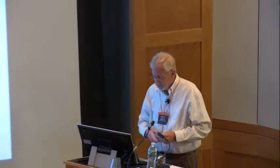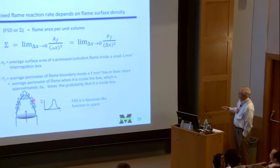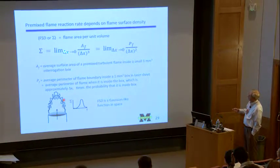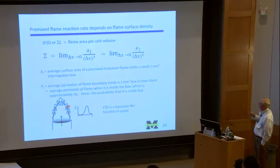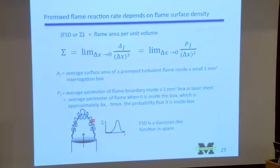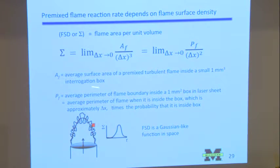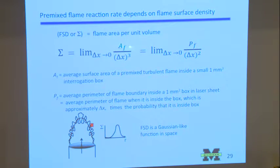Sigma is related to the PDF — if the flame is really dense and wrinkled, it'll have a high probability of being there. The flame surface density is defined as the limit of the flame area per unit volume. We define sigma as delta A over delta V, and as delta x goes to zero this ratio remains finite — sigma has dimensions of one over millimeters because it's area over volume. We can't directly measure the 3D flame surface area, but we can take a laser sheet and measure the perimeter of the flame surface. A slice of the 3D flame gives a wrinkled line, and delta x squared is the area of a small interrogation box in the 2D laser-sheet image.